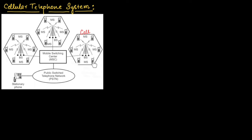Each cell consists of a mobile station and a base station. You can assume the mobile station as your handheld devices like a mobile phone, and the base station as telephone towers. Each cell consists of mobile station (MS) as well as base station (BS).